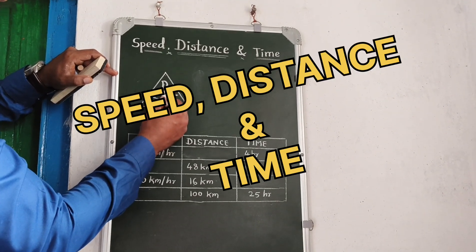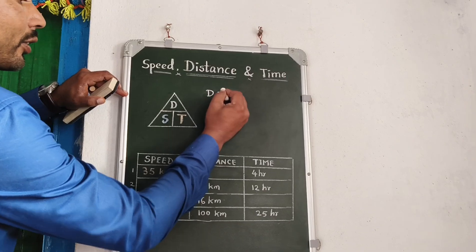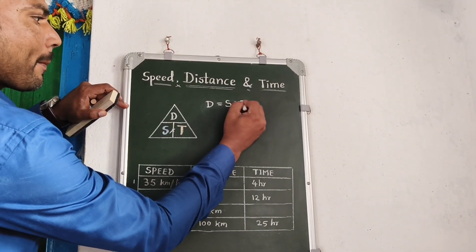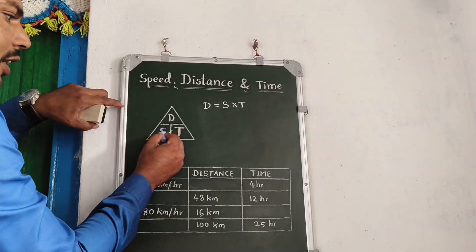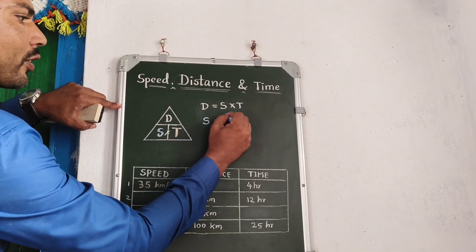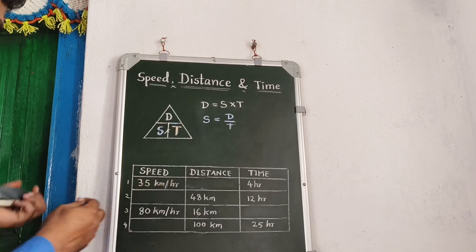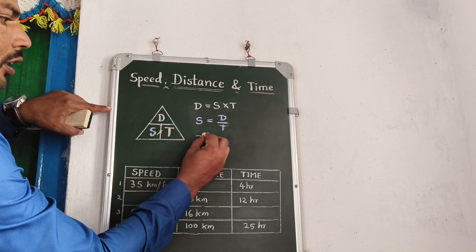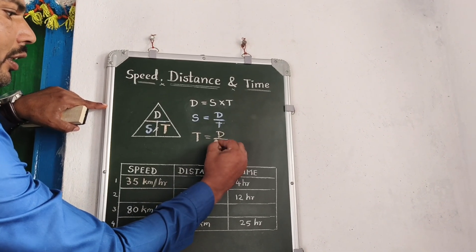D is equal to S into T. S is equal to D by T. T is equal to D by S.